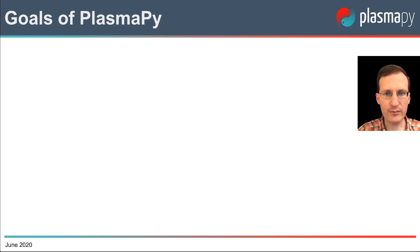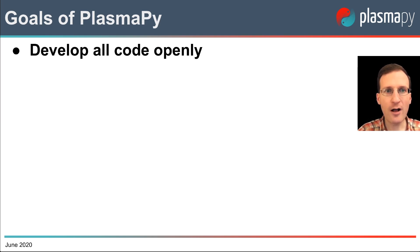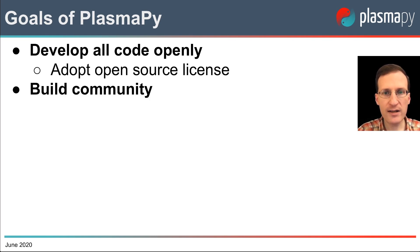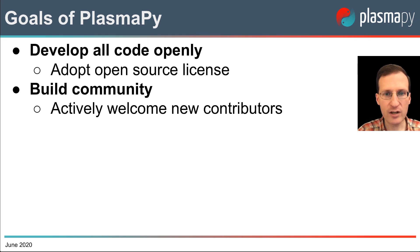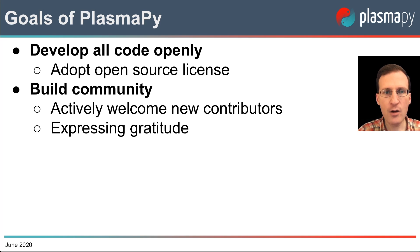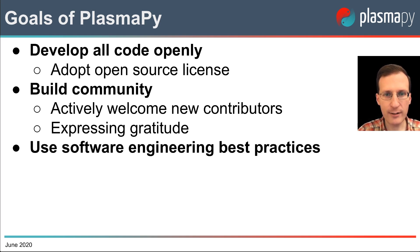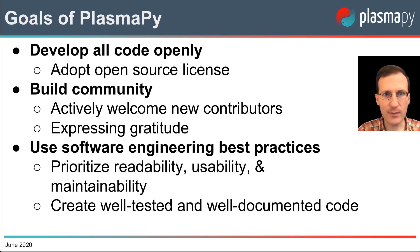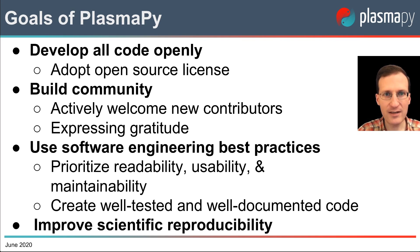What are the main goals of the PlasmaPy project? First, we are developing all code openly. All code will be released under an open source license that allows you to freely use, modify, and redistribute the software. We are building communities surrounding the software project by actively welcoming new contributors and expressing gratitude to members of the community. We strive to use best practices for scientific software engineering. We prioritize readability, usability, and long-term maintainability of our software by creating well-tested and well-documented code. By doing all of this, we are encouraging practices to ensure that our research becomes scientifically reproducible.